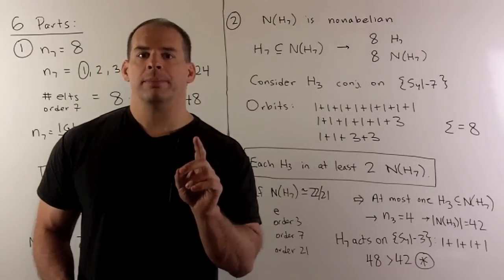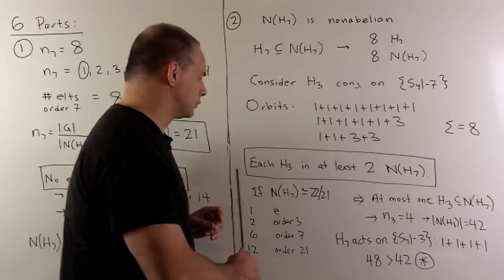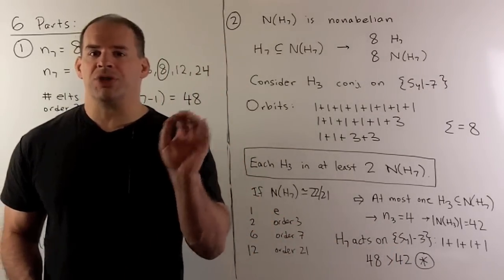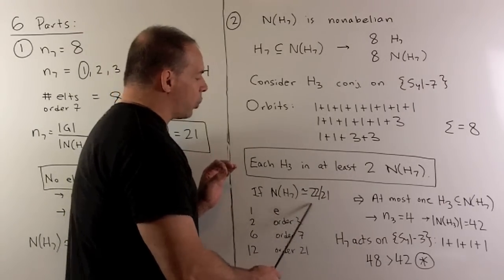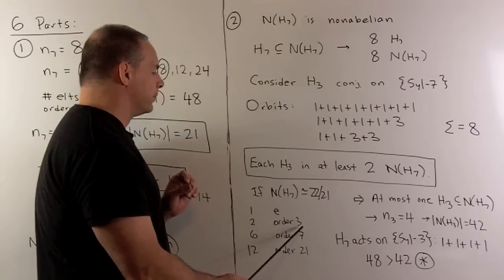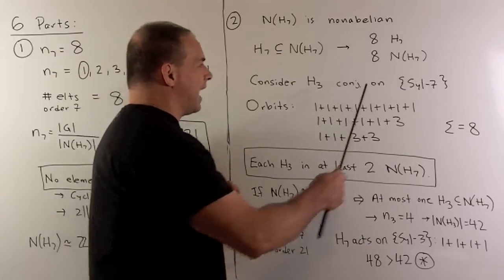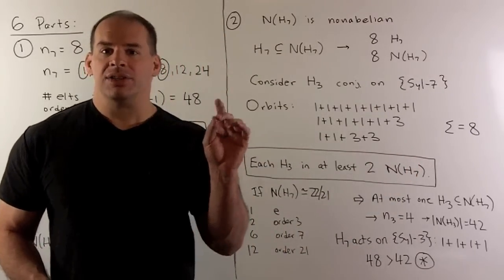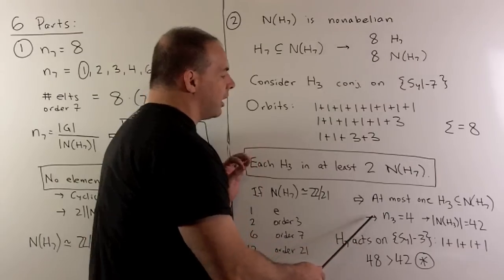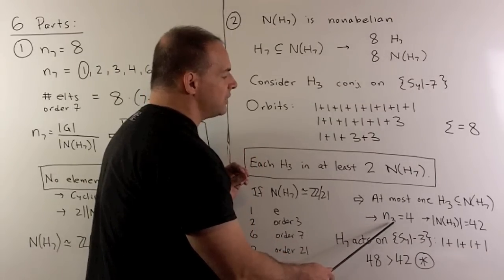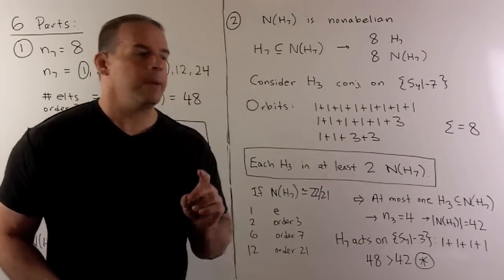Now, that shows our first part. Every Sylow 3 is contained in one of our normalizers, and in fact, it'll be contained in at least two. Now, if we assume the normalizer of our Sylow 7 is abelian, because that's isomorphic to Z minus 21, and if we count elements and the orders, we'll see that we have two elements of order 3. So, let's put our numbers together here. We're going to have exactly one Sylow 3 in a given normalizer. I have eight normalizers, so there are going to be at most eight Sylow 3s. Now, we know that each Sylow 3 is going to be in at least two of these normalizers. So, if I consider that in our Sylow theory, we're going to have to have that the number of Sylow 3s is equal to four.